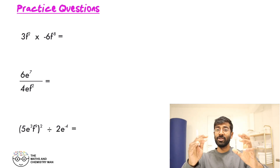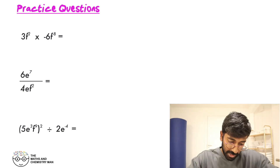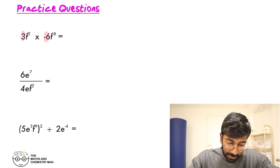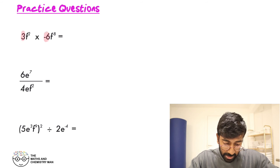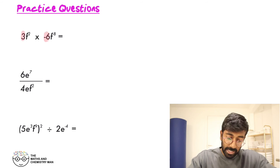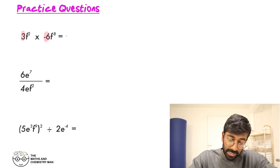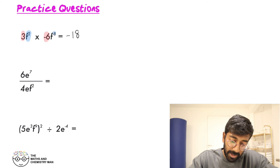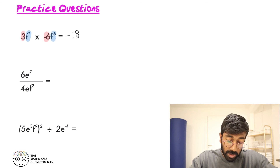Right, solution time! So the first one, we've got a multiplication: 3 times by minus 6 — that's going to give us minus 18. And then let's deal with the F's: F squared times F to the minus 8.